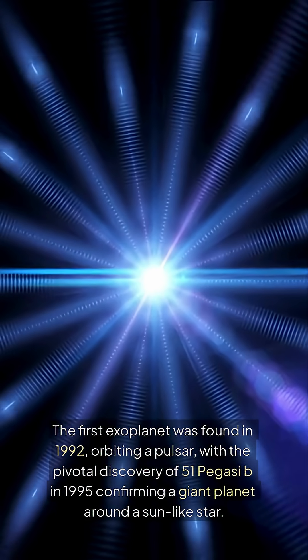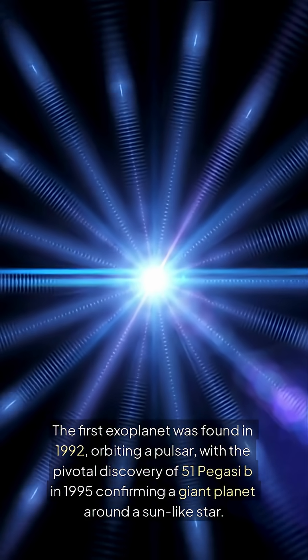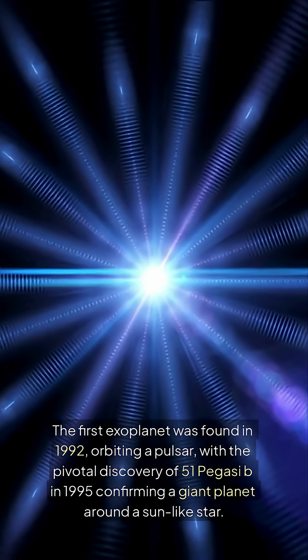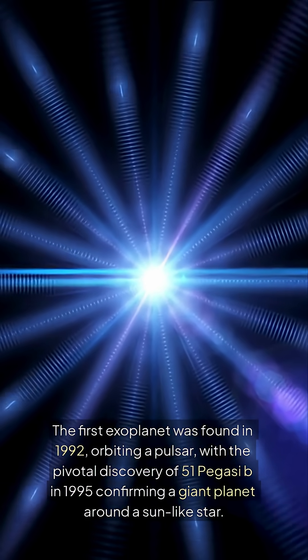The first exoplanet was found in 1992, orbiting a pulsar, with the pivotal discovery of 51 Pegasi b in 1995 confirming a giant planet around a Sun-like star.